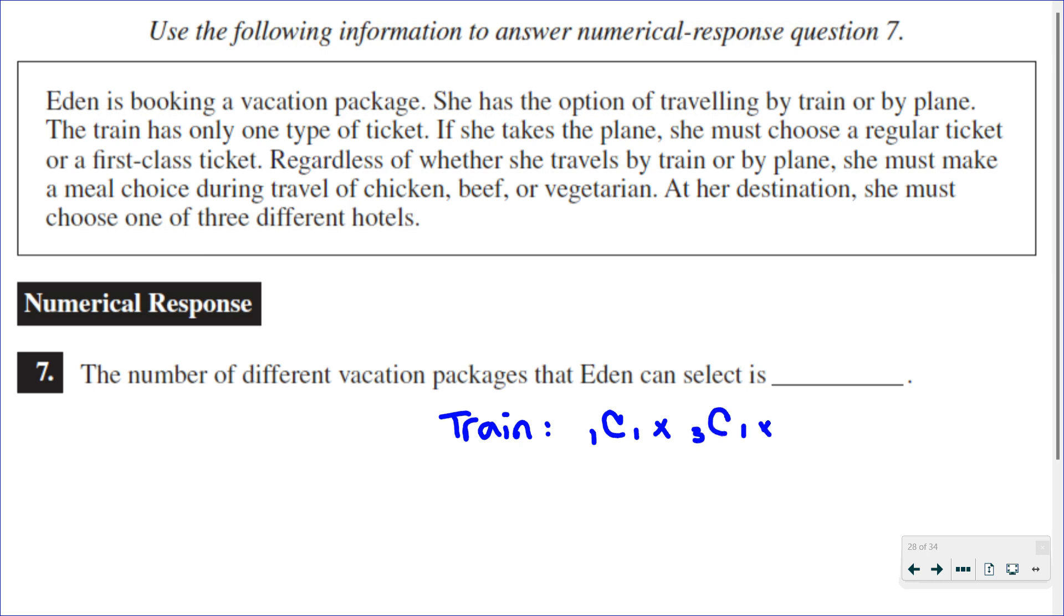So that would be 3C1. And then when she arrives, she has a choice of three hotels. This is a combination because the order that she chooses her meals and her hotel does not matter. So if I was to multiply those together, I would just get nine options.